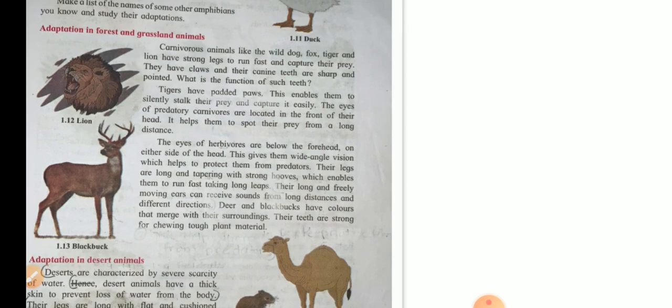Deer and black bucks have colors that merge with the surroundings. This is known as camouflage. They can protect themselves from their predators. Their teeth are strong for chewing tough plant material because they are herbivores.